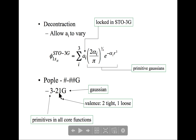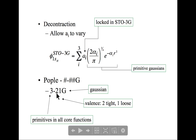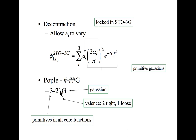For example, in 3-21G applied to carbon: the second quantum level—2s and 2p orbitals—would each have a tight basis function formed as a linear combination of two primitives, and a loose basis function that's just a single primitive on its own. So two tight primitives make one tight basis function, and one loose function is not constructed from primitives. There's also the 6-21G basis set where the core is contracted from six primitives instead of three, giving a better shape for core orbitals.